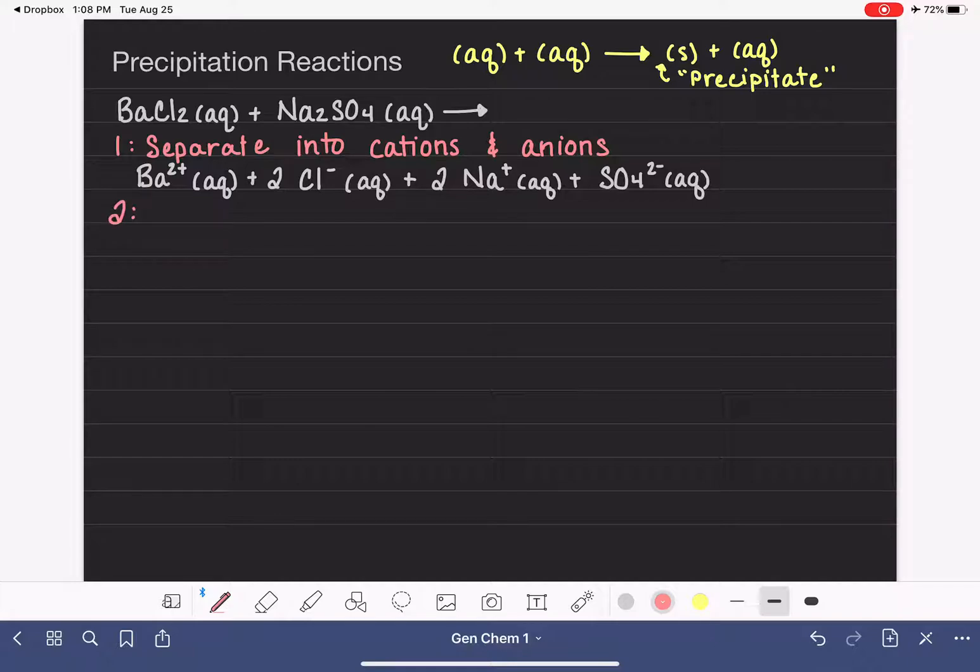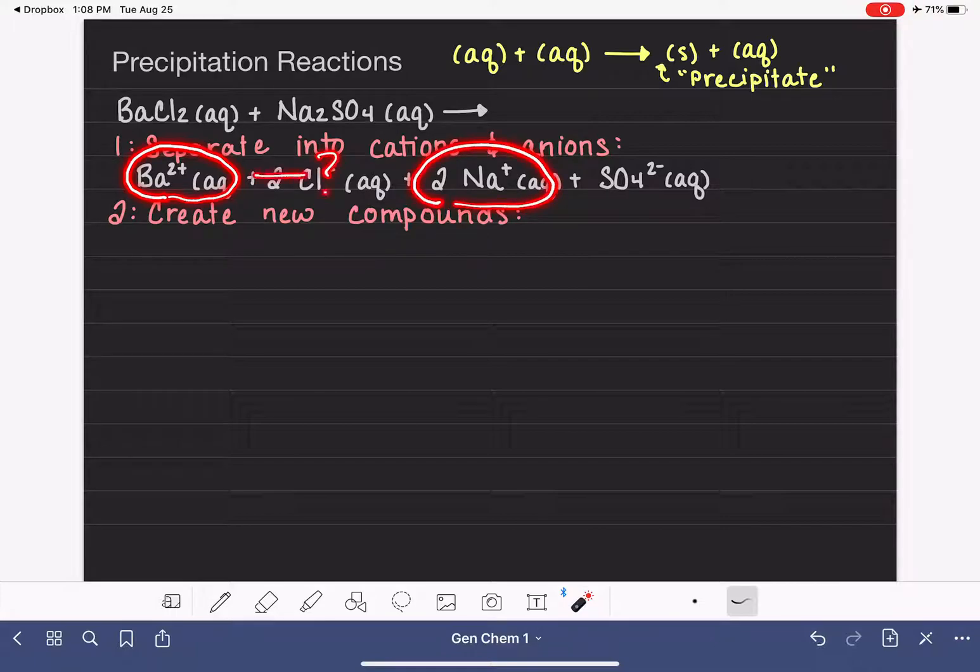So once we get everything separated into the cations and anions, we are going to use those ions to create our products, which are going to be new compounds. So what I mean by that is that we're going to take the barium ion and we're going to combine it with something to make something new and exciting. We don't want to combine it with the chloride ion only because that doesn't create a new compound. That would just create BaCl2 again, which is not new for this particular reaction. So instead of combining the barium with the chloride, could we combine it with sodium? Would that be an option? In this case, no, it's not because we cannot combine two cations together. We have to put a positively charged ion with a negatively charged ion.